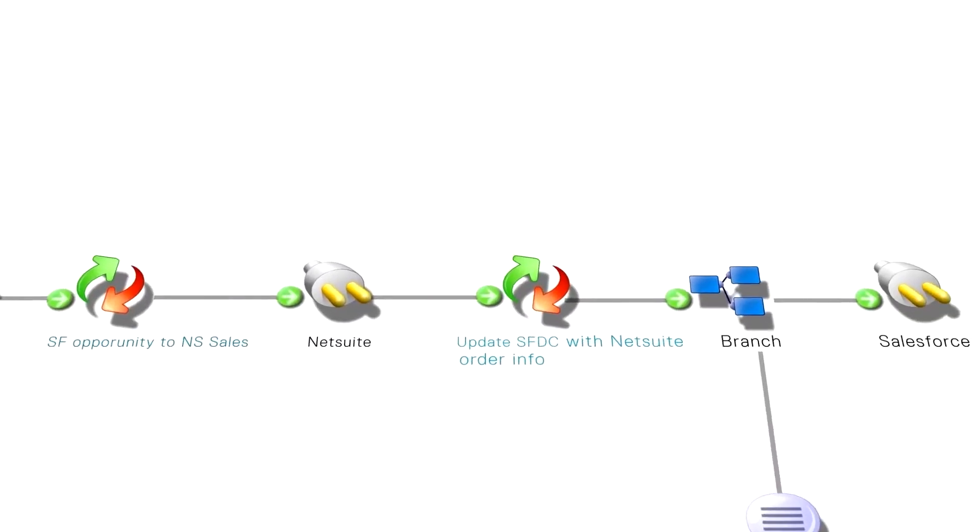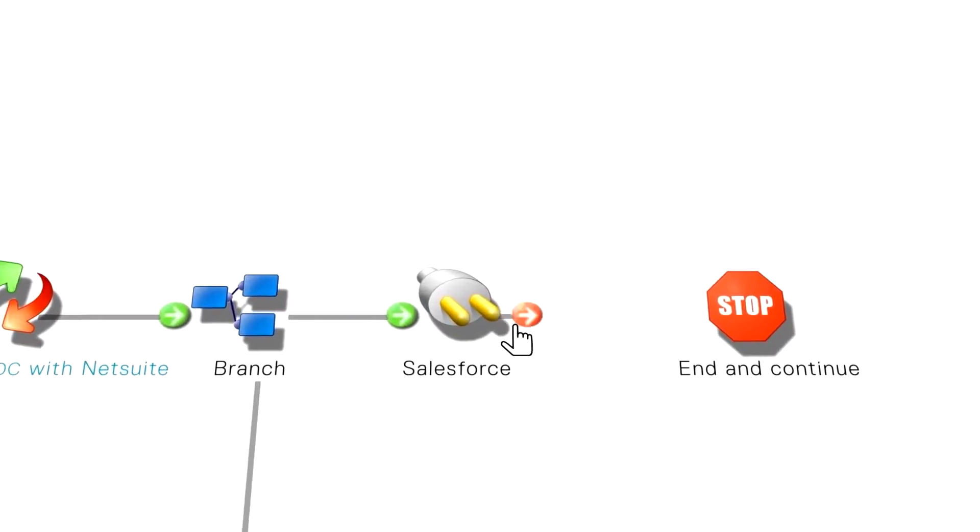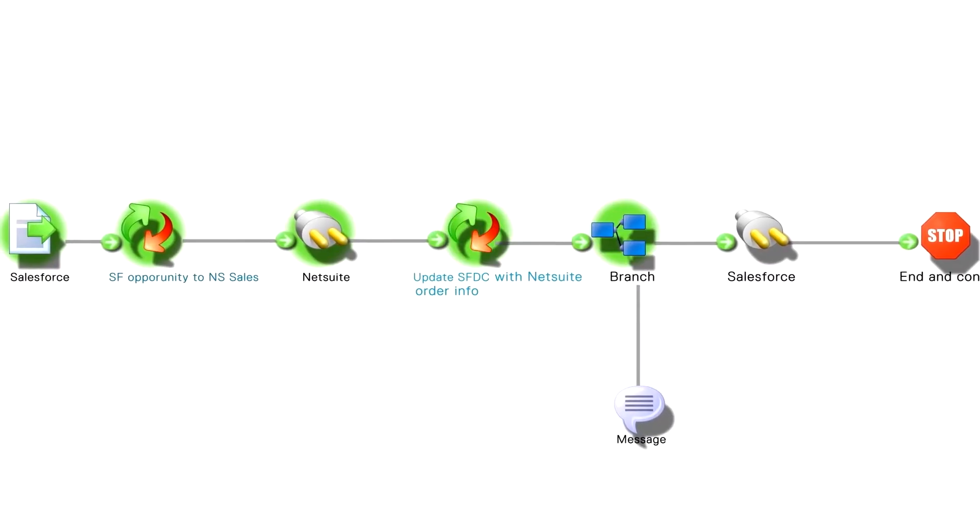When you put these systems in place, you're able to automate the process error-free from one platform to the other. I call this swivel chair integration — when you have an individual in the middle swiveling from one system to the next, transferring data. This is a recipe for disaster. People just can't maintain the concentration level needed during a whole day to transfer information properly. You need a system to do that work.